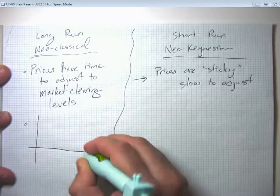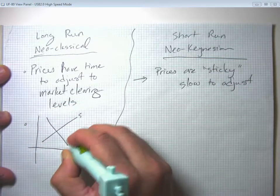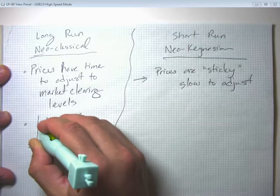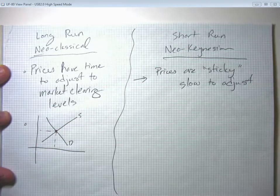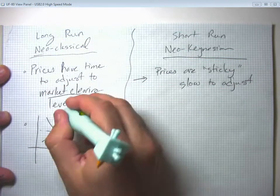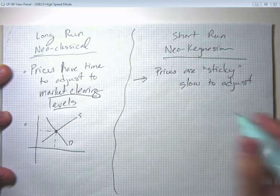Because of that, in the long run, we think that prices eventually get to these market clearing levels. Market clearing means supply equals demand.